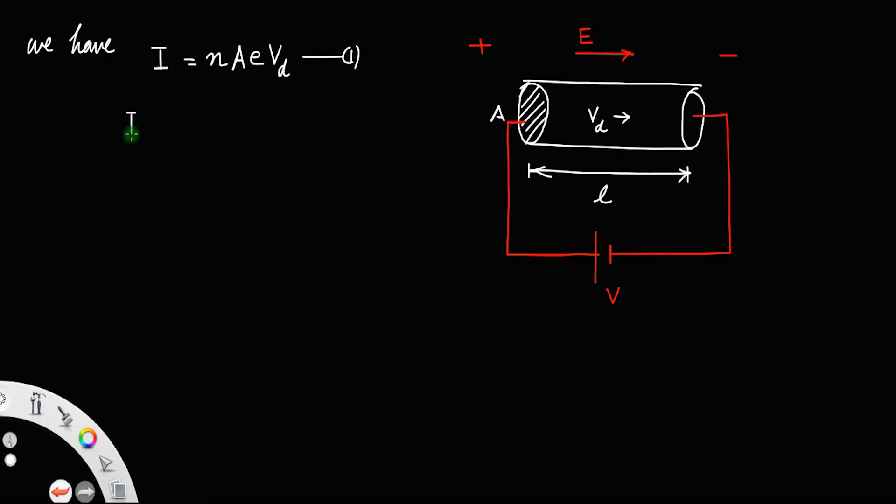So that I is equal to, also the drift velocity, expression for drift velocity will be the charge of the electron into electric field times the relaxation time divided by mass of the electron. We also derived this expression. I will put the link in the description. If you want to know how you derive the drift velocity you can go back and check the video.